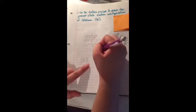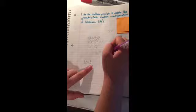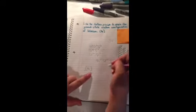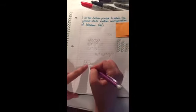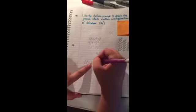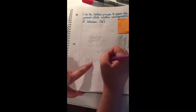That leaves us with 4s2, 3d10, and 4p4. So what we're going to do is write our argon and simply put these listed right next to it.